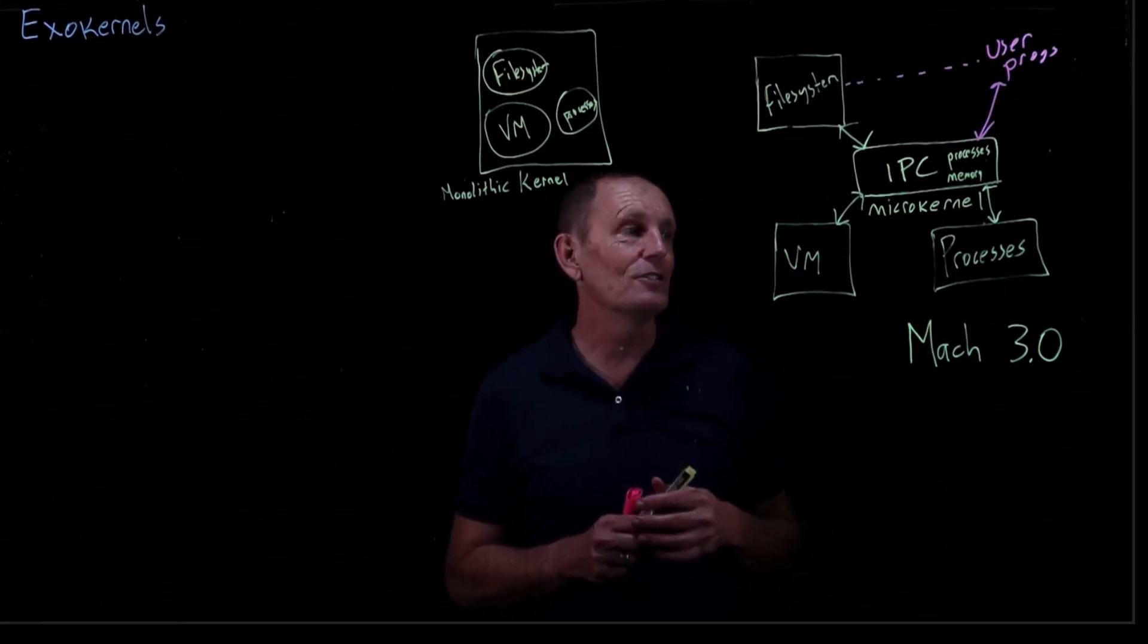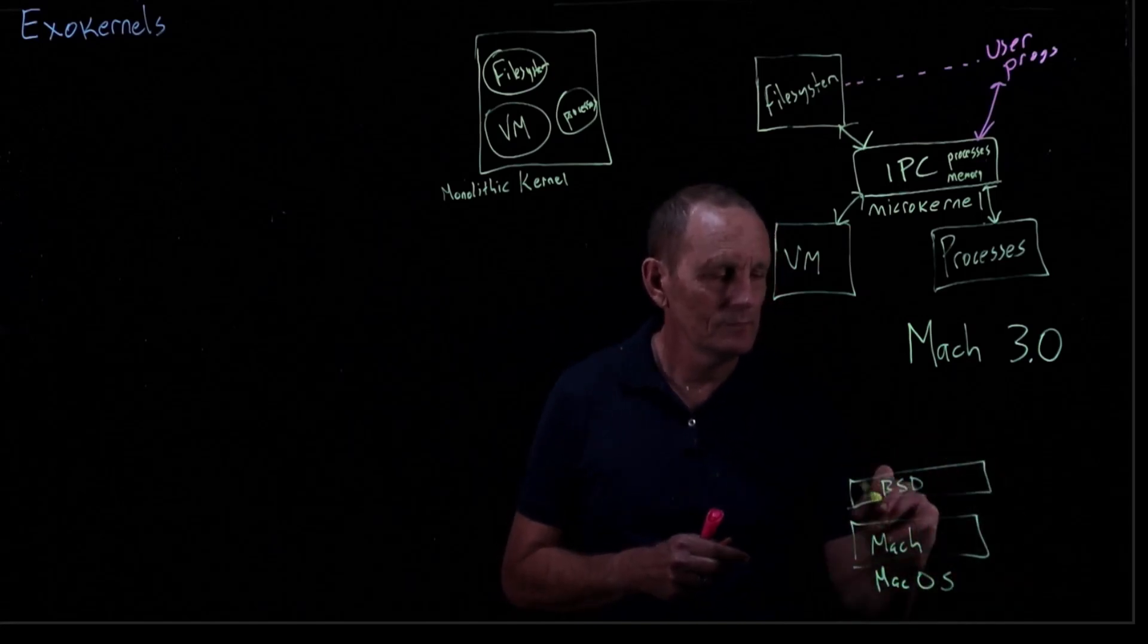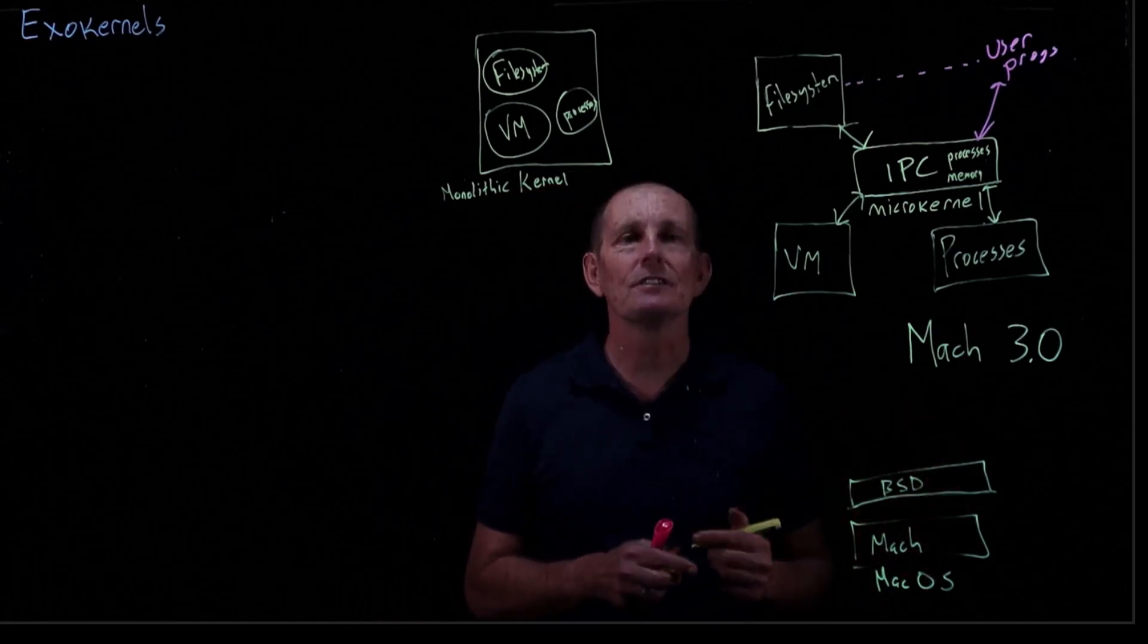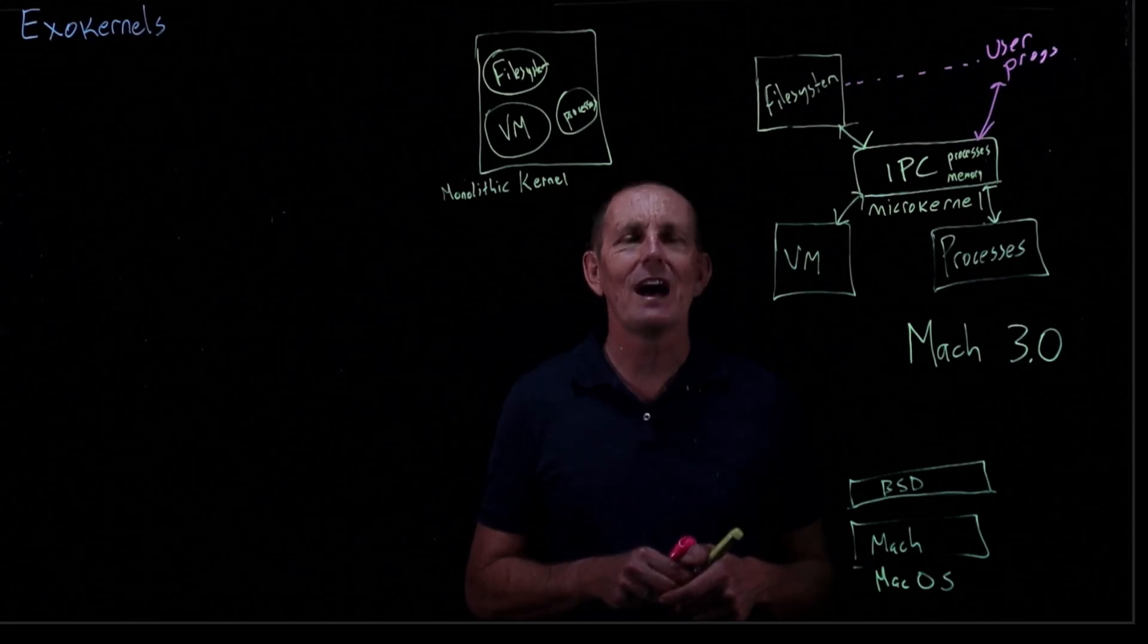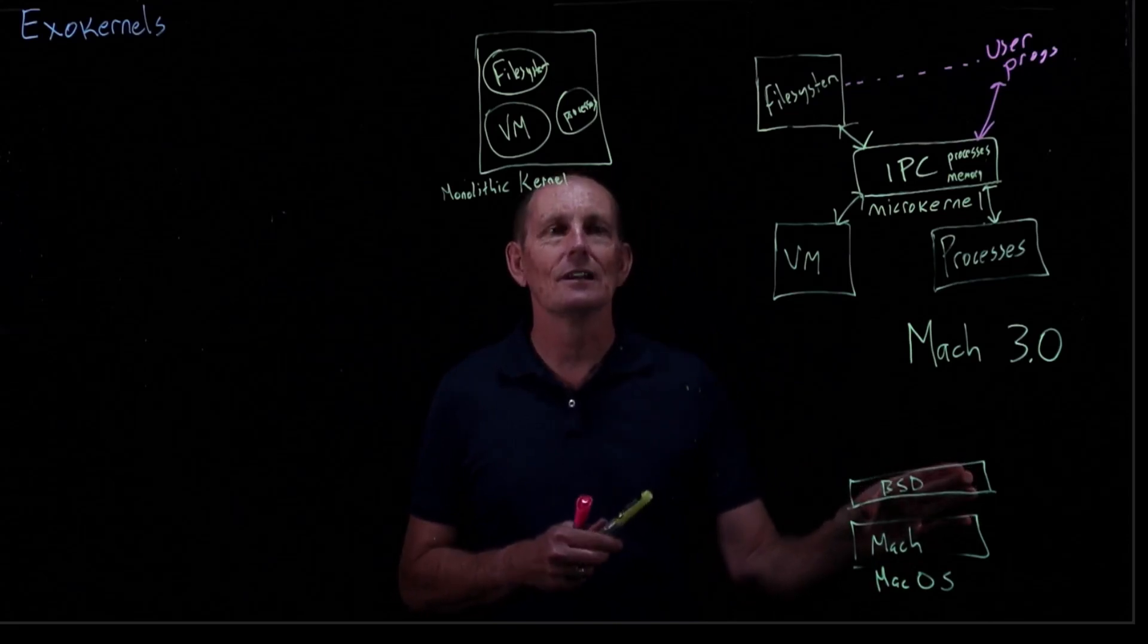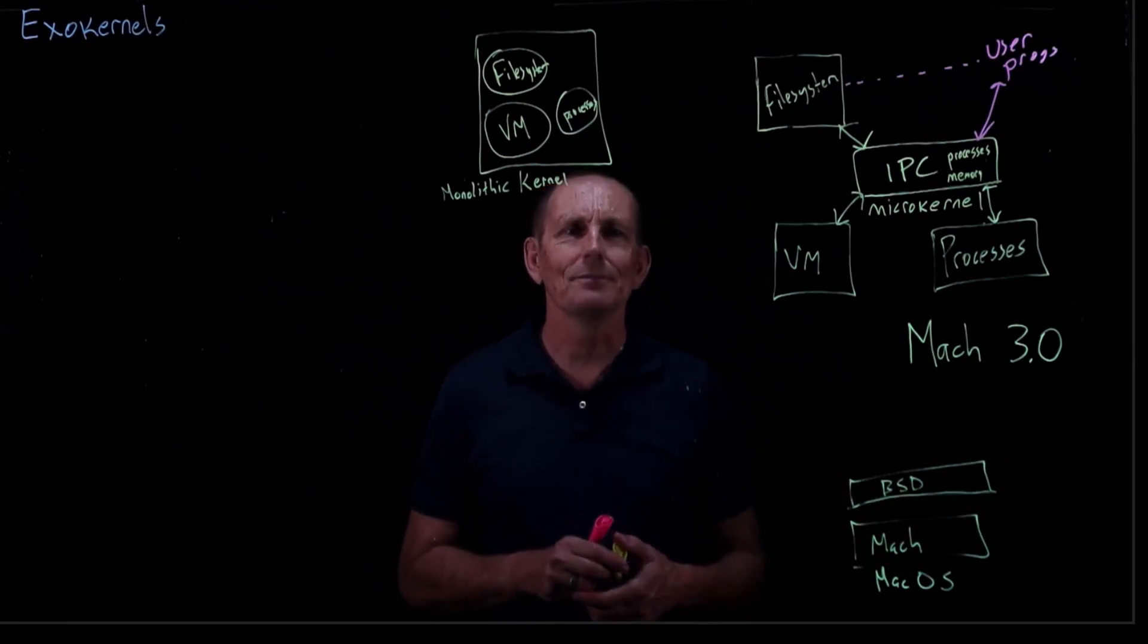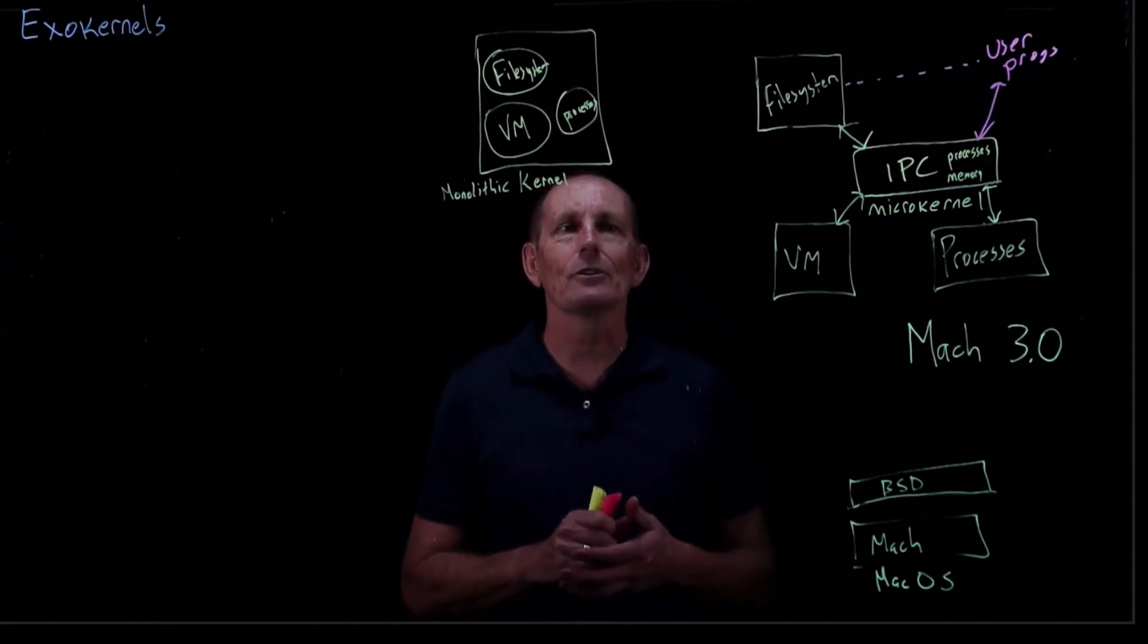So sometimes what happens, and this is really more what has happened in the Mac OS, is we have our Mac OS with Mach at the bottom. And then one very large service on top of it, which is BSD, the Unix. So we really sort of have a monolithic kernel on top of a microkernel and don't have separate services in this particular part of the kernel. There are some other services, I believe, that Mac OS has as well, but in some sense, it is not truly using a microkernel well.